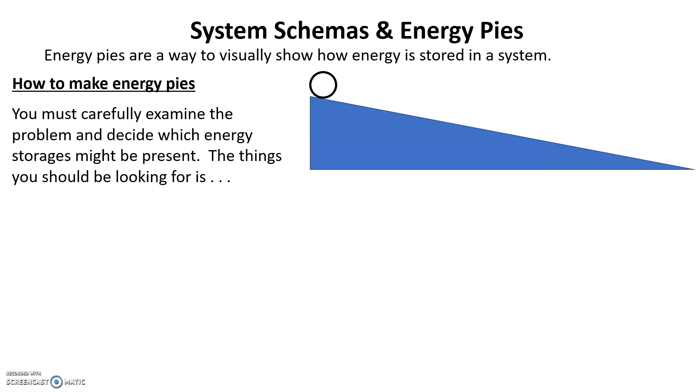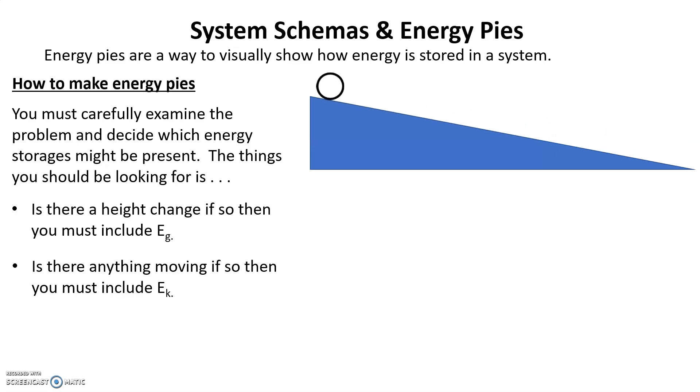How to make energy pies. You must carefully examine the problem and decide which energy storage might be present. The things you should be looking for are: is there a change in height? If so, there must be EG. Is there anything moving? If so, then you must include EK. Are there any springs or rubber bands? If so, you must have E-elastic.